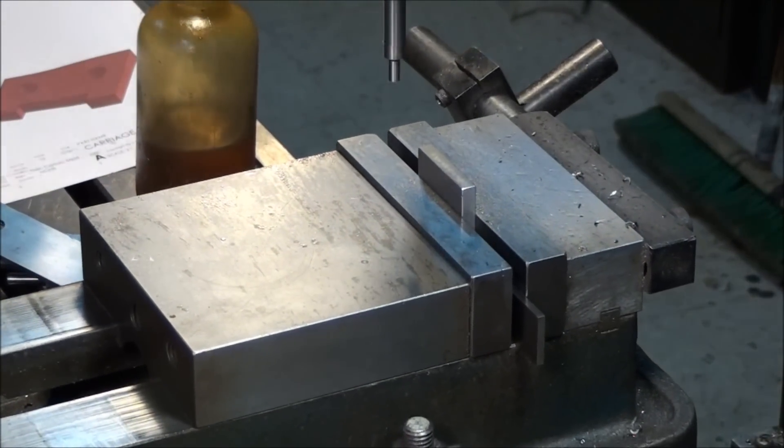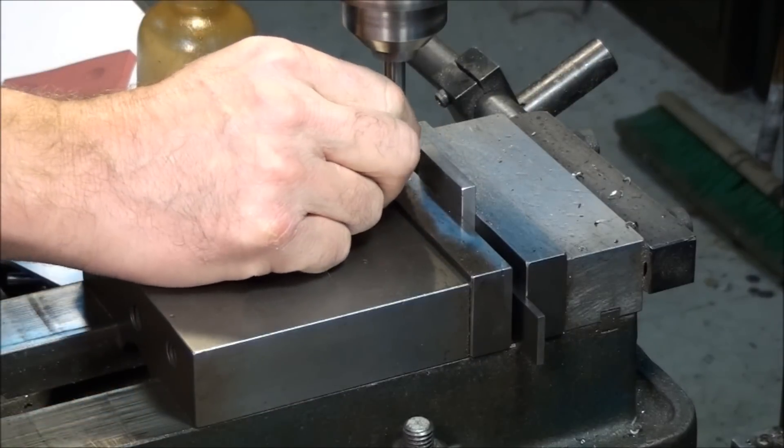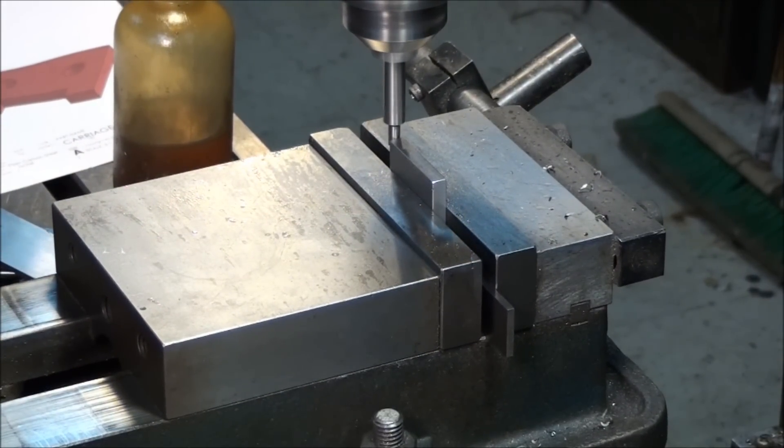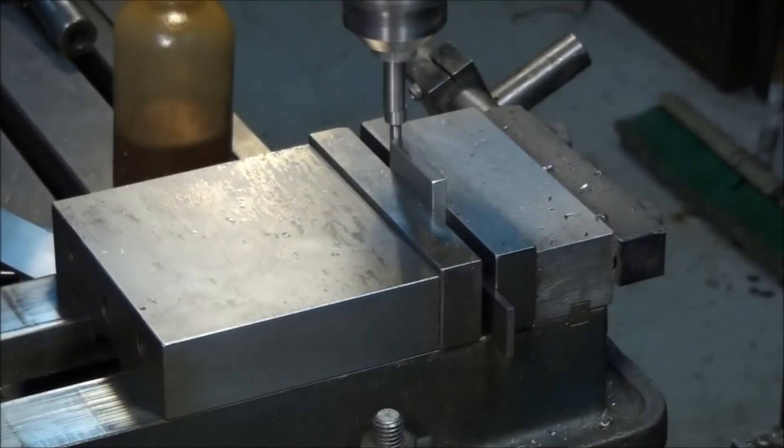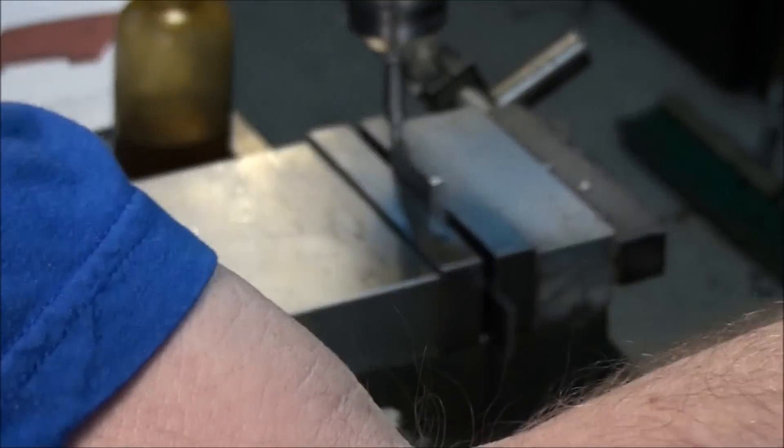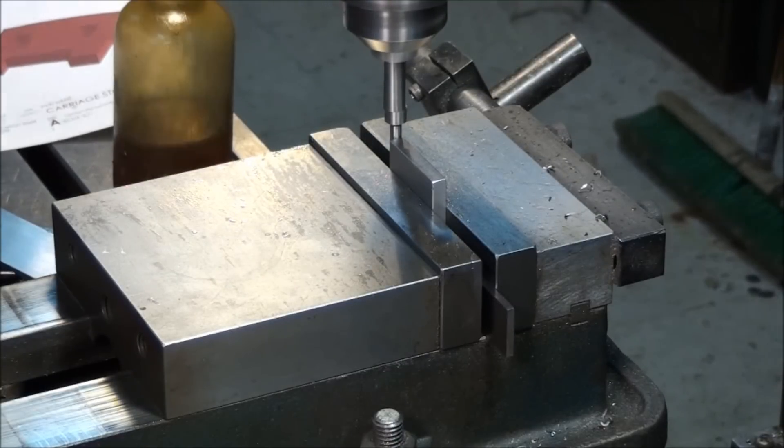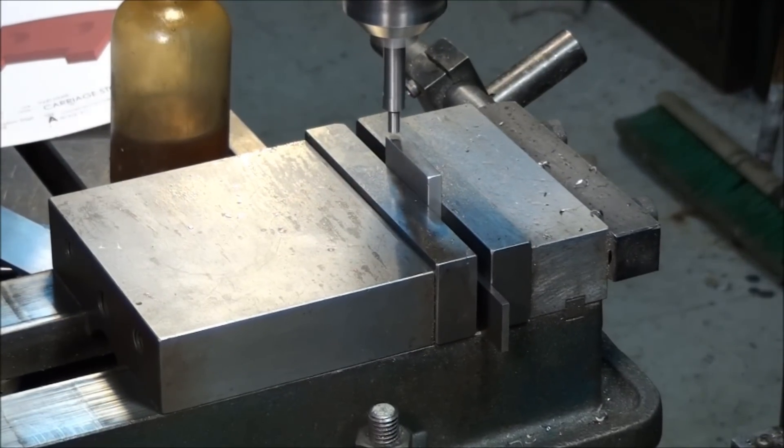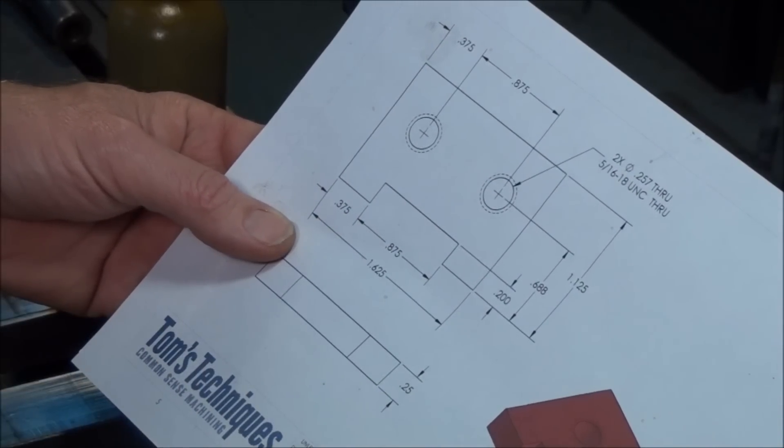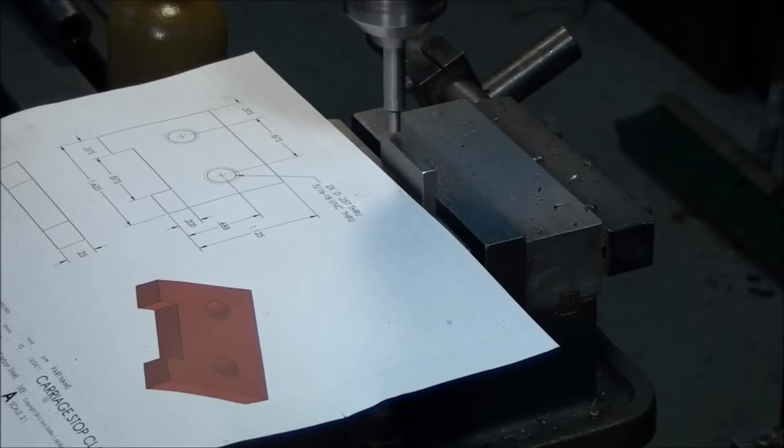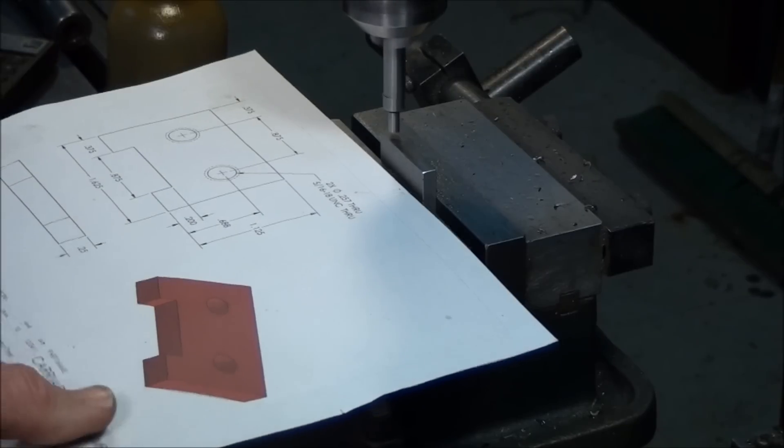Center up on the part. Okay, this slot is 0.375 from the left edge here, so let's center up on that and move over. 0.375 plus half of 7/8, that's what, 13/16? Is that right? It's getting kind of late so I'm going to use the calculator just to be sure. Yep, 13/16 to the center.